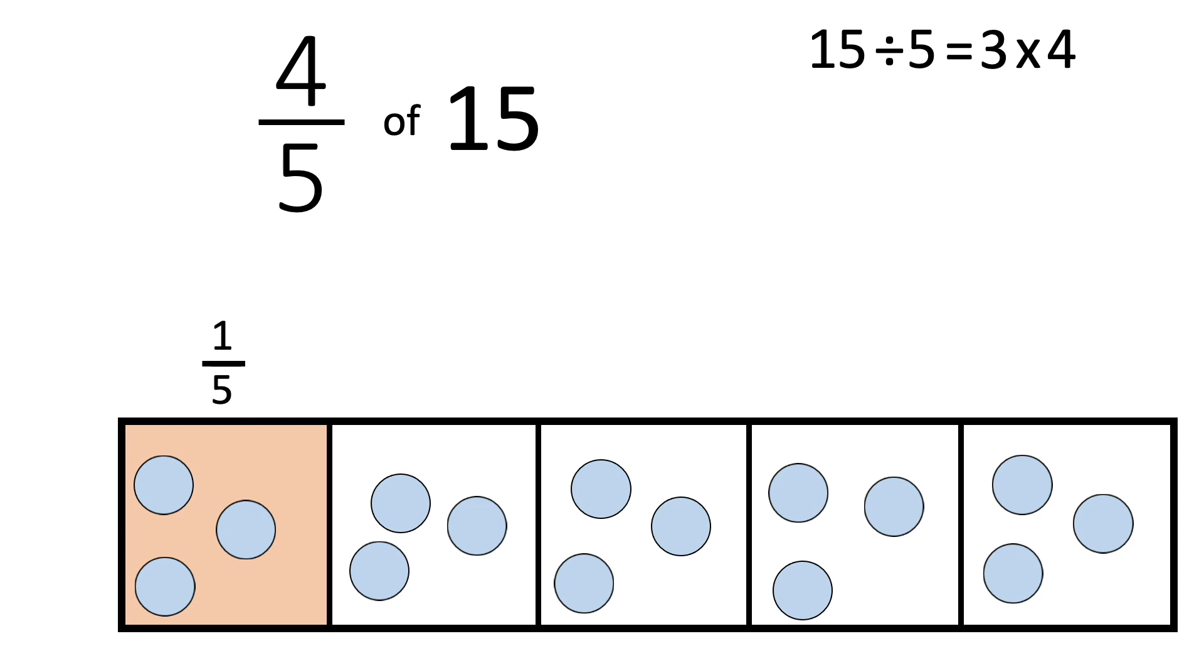And three times four is three, six, nine, twelve. So four-fifths of fifteen equals twelve.